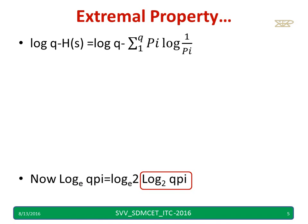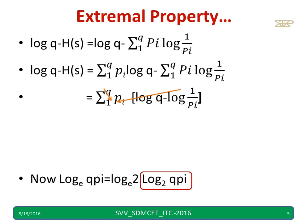Log q minus H of s I have written again. Simply I have included summation pi extra. Even though I include summation pi, it is not going to disturb the values because summation of pi 1 to q, when I add all the probabilities, the answer will become equal to 1. 1 into something will remain something. Simply I have taken summation 1 to q, pi common, and I have rewritten the above equation.